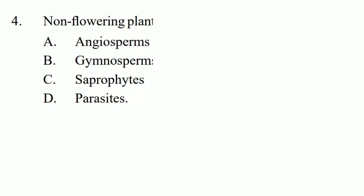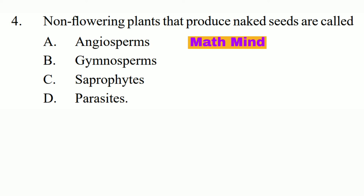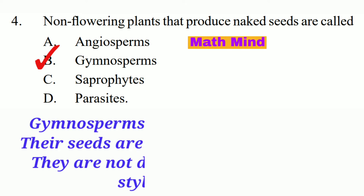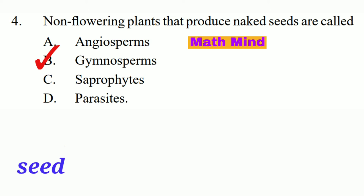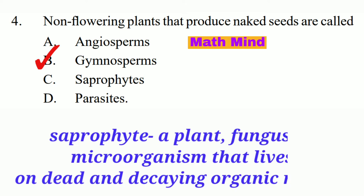Question No. 4. Non-flowering plants that produce naked seeds are called blank. Option B is correct: Gymnosperms. Gymnosperms do not produce flowers. Seeds are not produced inside the fruit; they cannot differentiate into ovary, style, and stigma. Angiosperms produce seeds enclosed within a carpel. A saprophyte is a plant, fungus, or microorganism that lives on dead, decaying organic matter.